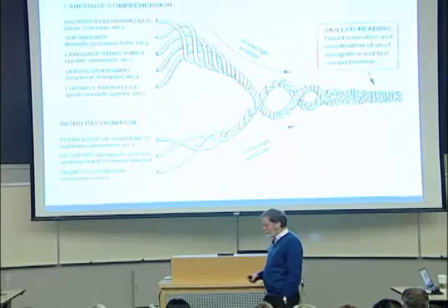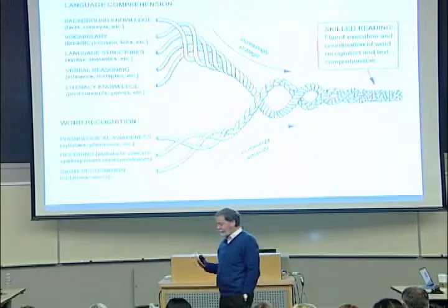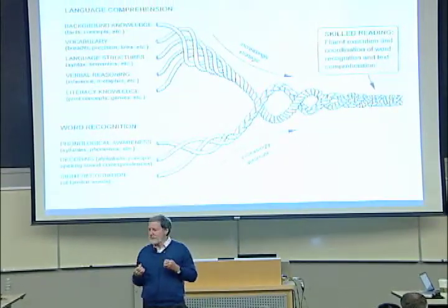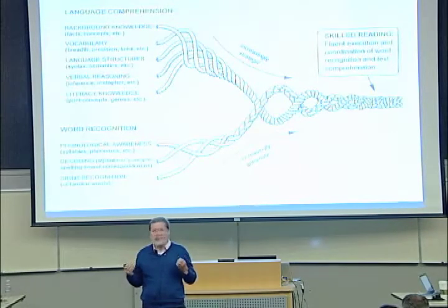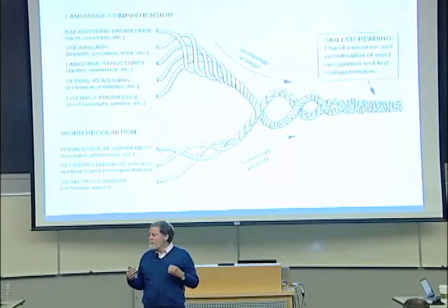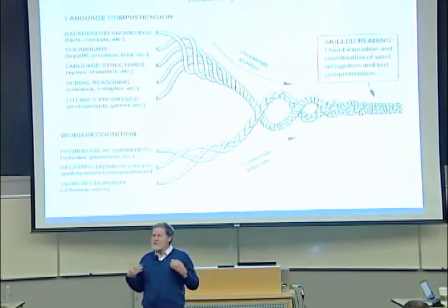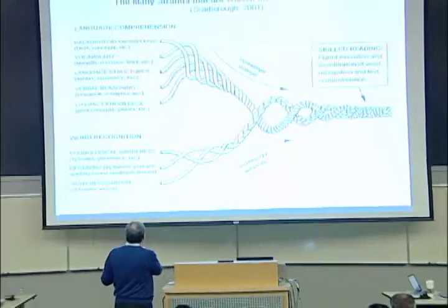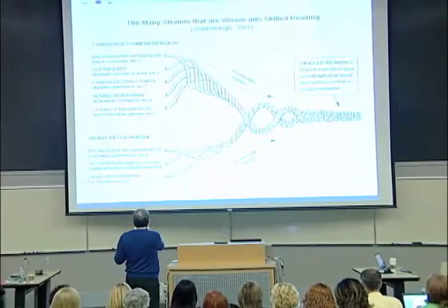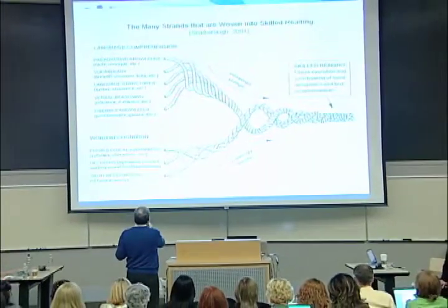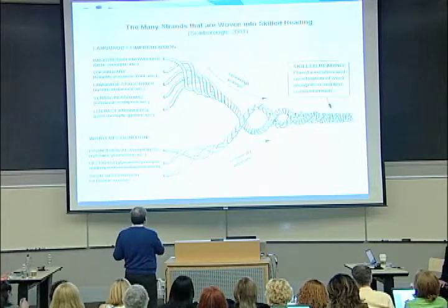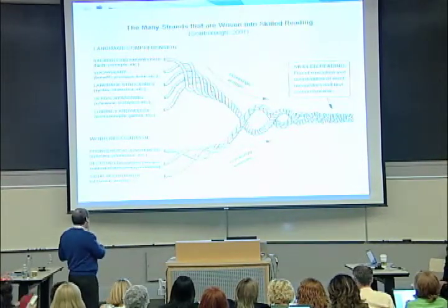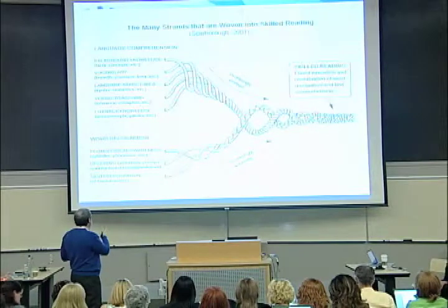Yesterday we talked about — when we look at the brain stuff, we see that there are many components in reading. Sometimes we think there's only two, which typically is done like this: there's something about comprehending language and something about word recognition. Word recognition is the stuff of decoding and so on.